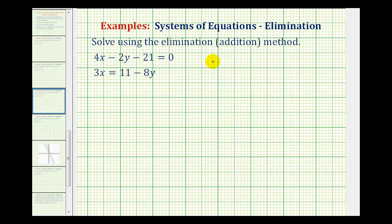We want to solve the system of equations using the elimination method, sometimes called the addition method. To solve this system of equations, we're looking for an ordered pair, an x and y value, that's going to satisfy both of the equations.